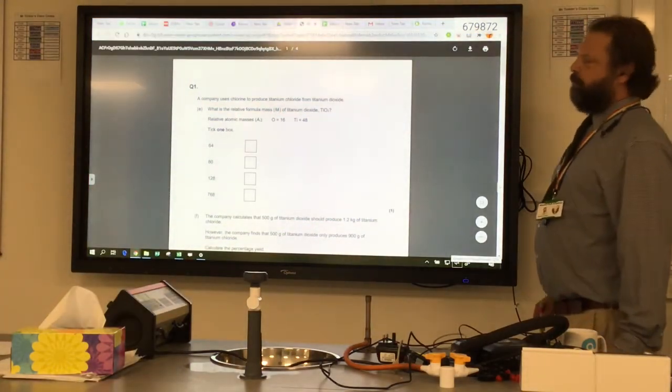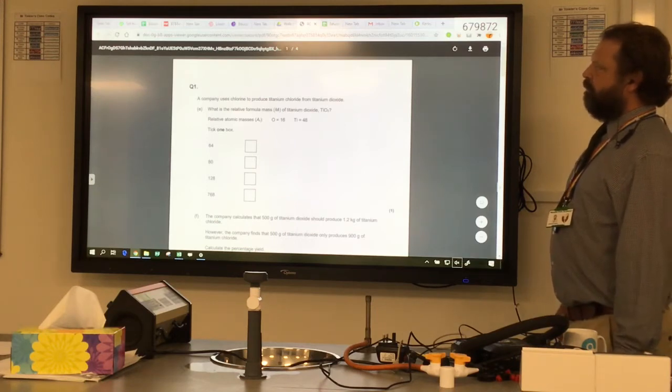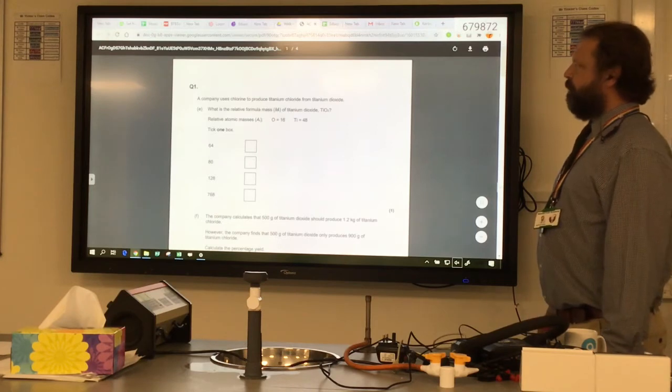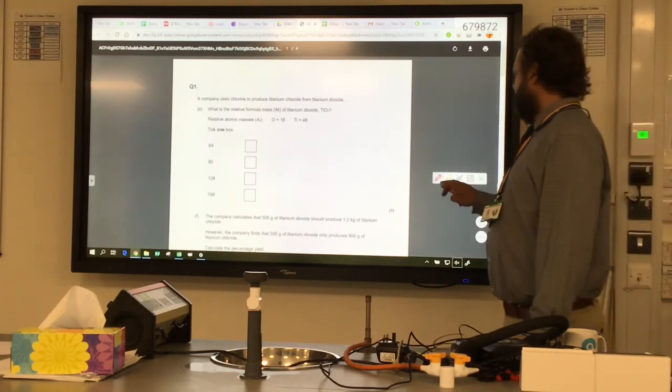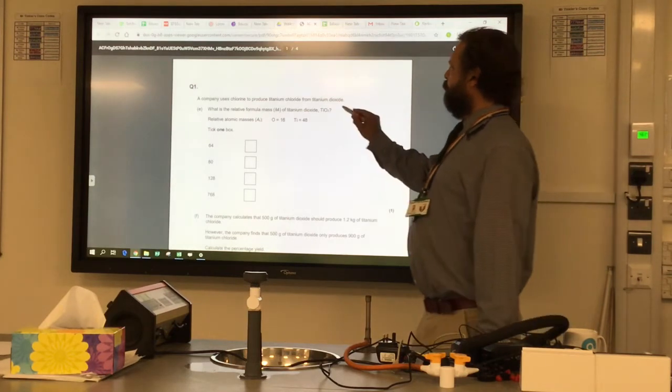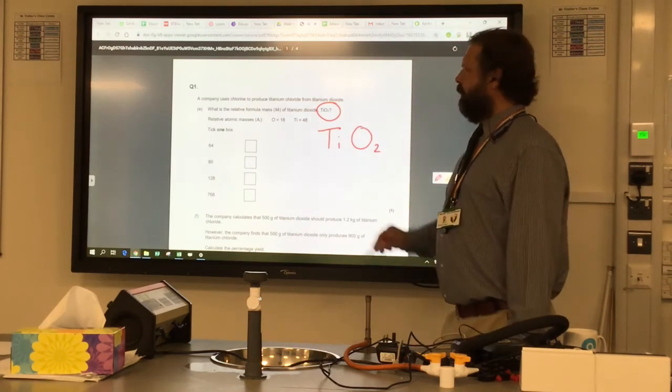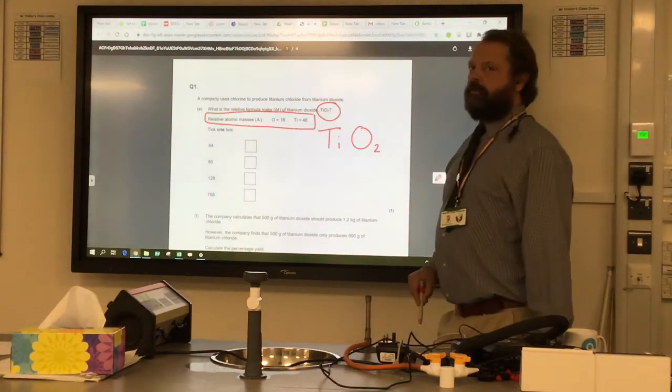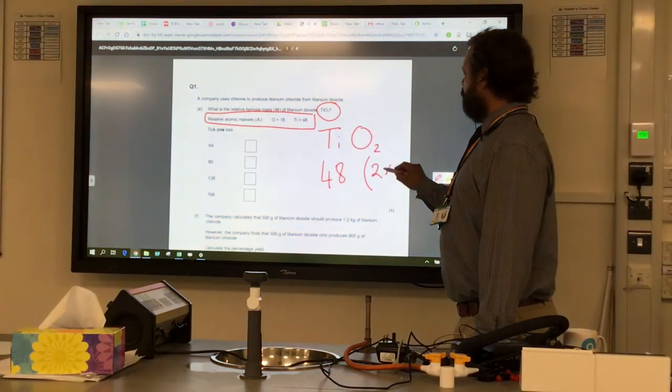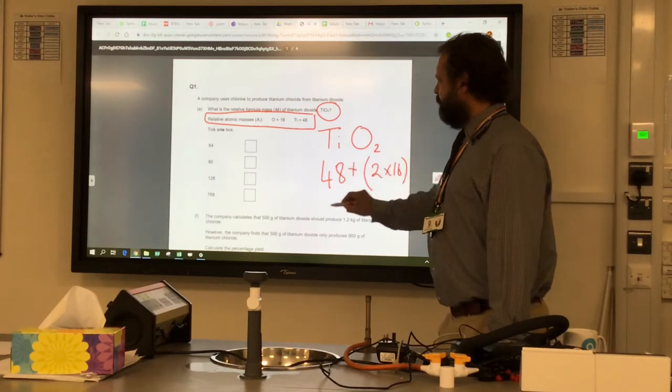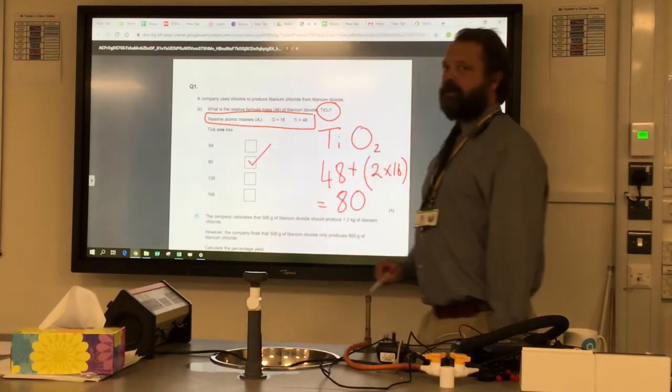Here we've got a typical foundation tier calculation question. It says a company uses chlorine to produce titanium chloride from titanium dioxide. What is the relative formula mass of titanium dioxide? Now it doesn't matter that you've never heard of titanium dioxide perhaps. We just need to apply our method. So we've got the formula - one titanium, two oxygens. We've been given the information we need, the relative mass, and we're going to add them together. 48 for the titanium, two lots of 16 for the oxygen. Add these numbers and they add up to 80. In the exam we have done that and then ticking the box gets us the mark.